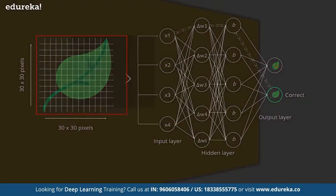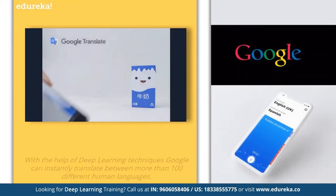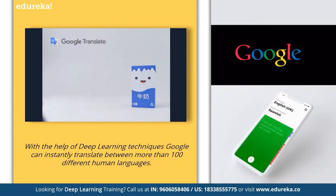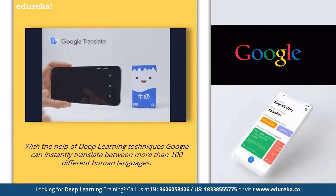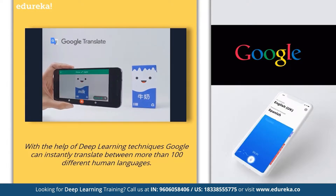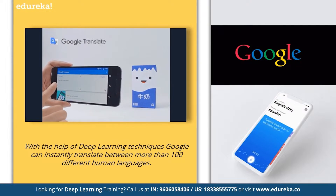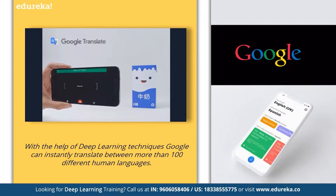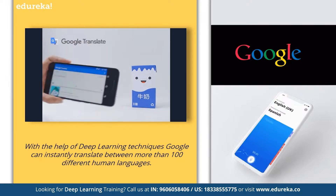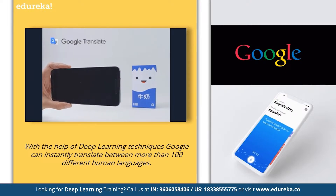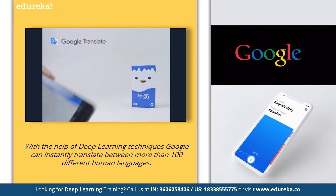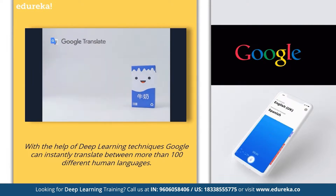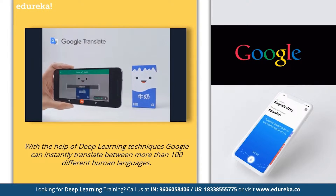Let's discuss a few real-world applications of neural networks. With the help of deep learning techniques, Google can instantly translate between more than 100 different human languages. Visual translation is an interesting application of deep learning — it can identify images that have letters, turn them into text, translate them, and then recreate the images with the translated text. Google has an app for this purpose called the Google Translate app.